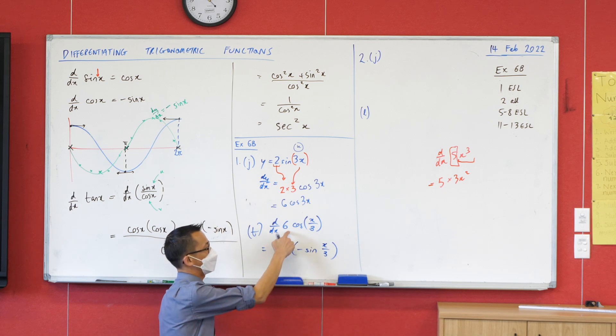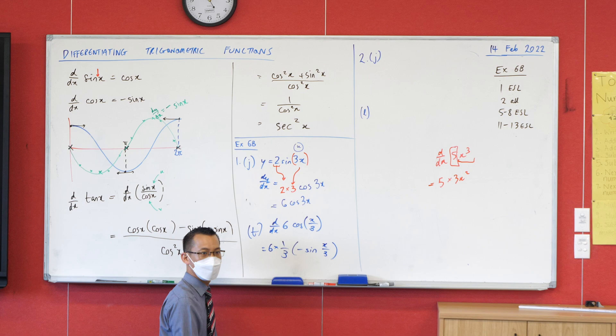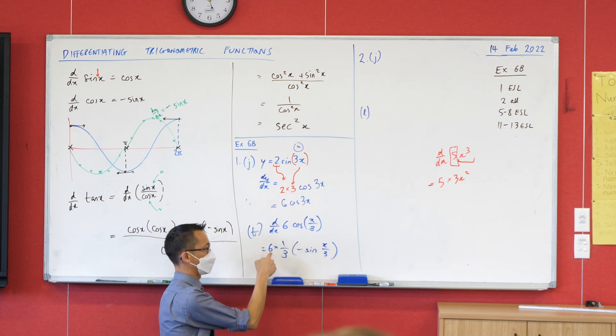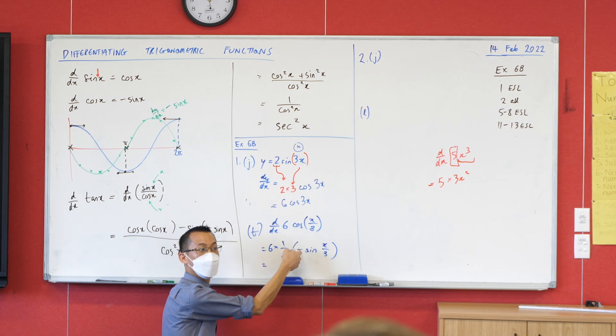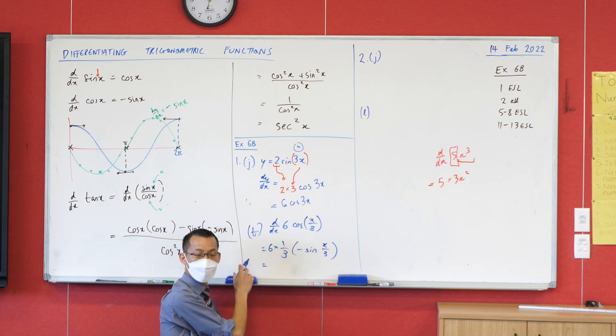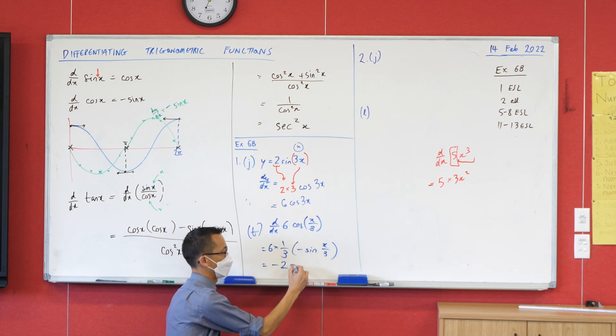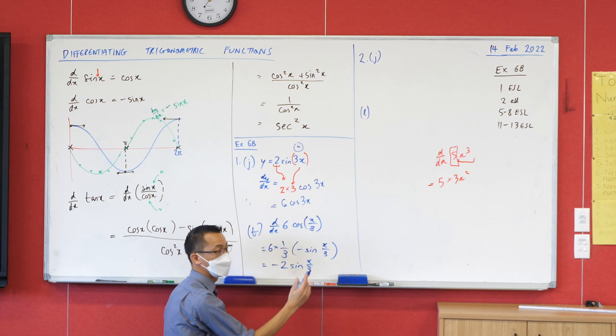And then the last piece of the puzzle is that 6 that was hanging out the front there, right? So now, noticing that I've got the 6, the third, and the minus, and you put them all together, you'll get negative 2, and then the rest of it. Is that okay?